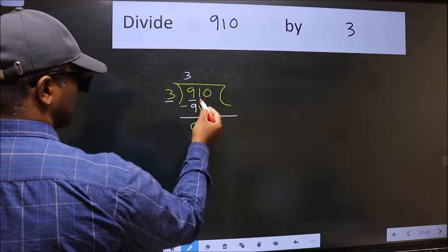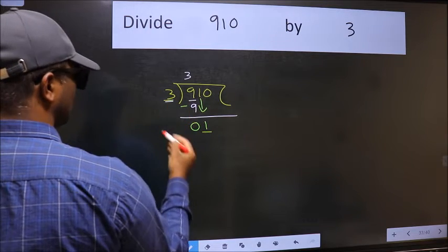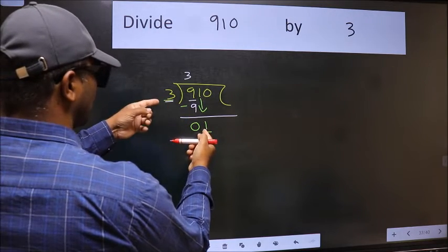After this, bring down the beside number. So 1 down. Now here we have 1 and here 3. 1 is smaller than 3.